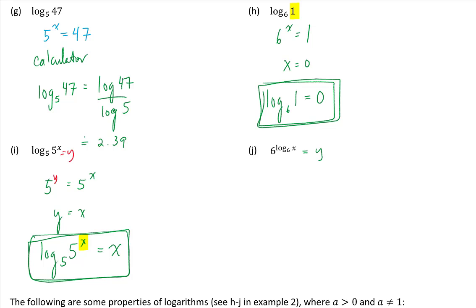And part j. Again if we call this y, then we have log to the base 6 of y is equal to log base 6 of x. Notice these are both log of 6. So the insides of this function must be the same, and we end up with y is equal to x. Since y was equal to 6 to the log base 6 of x, we note that 6 to the log base 6 of x is equal to x.